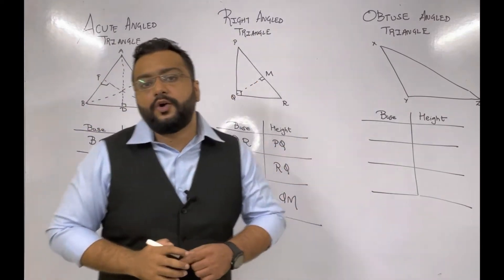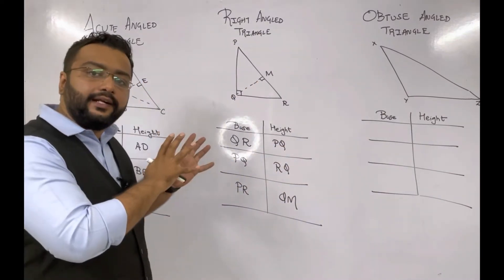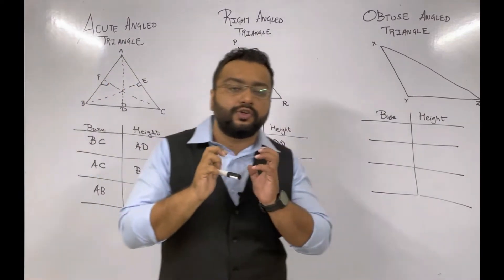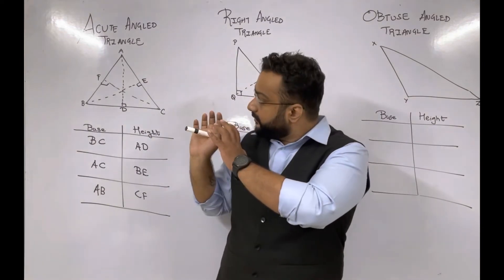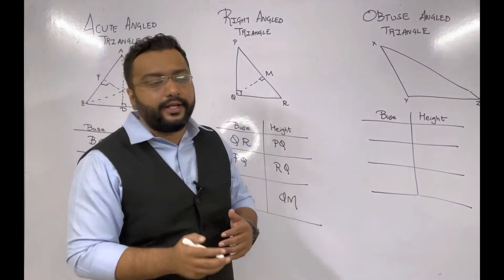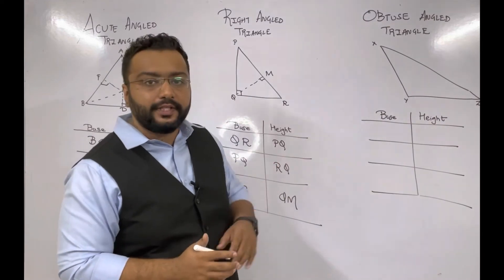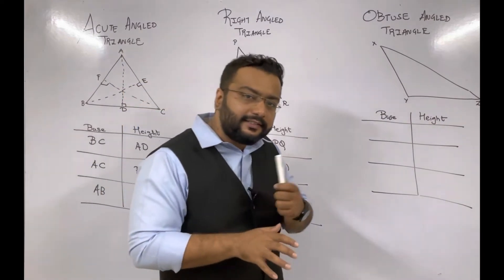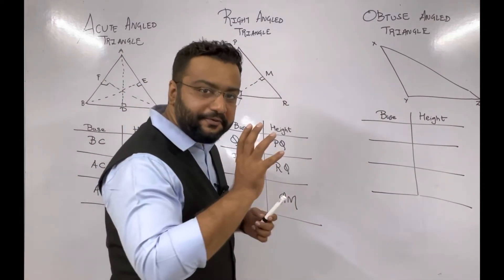We saw how to draw base and height in a right angle triangle and in an acute angle triangle. Now let's go ahead and observe the obtuse angle triangle.